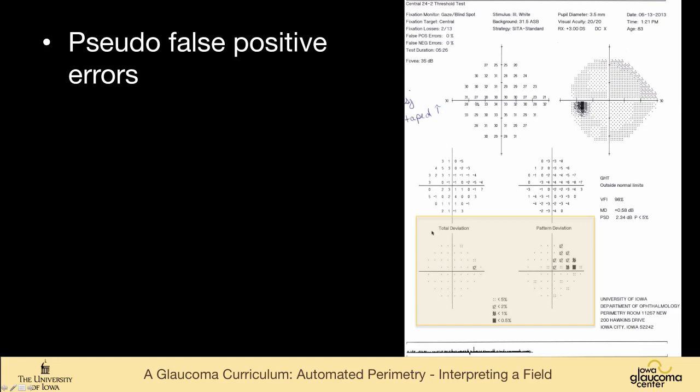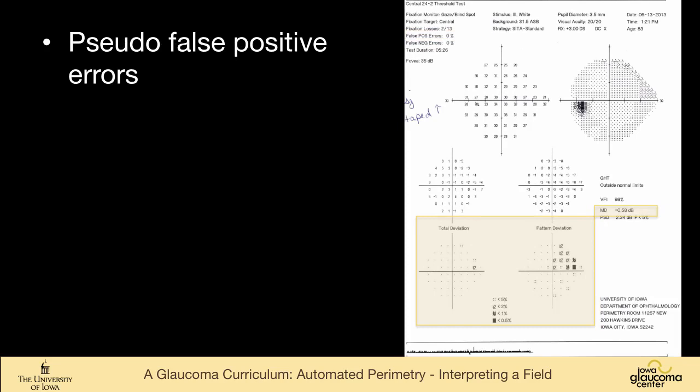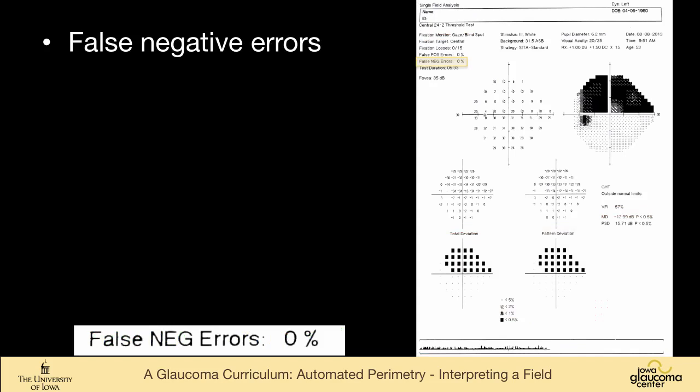And this is an example. There's zero false positives here. Total deviation, a little bit of abnormality, but nothing to write home about, and yet there's this arcuate defect here. Notice how this fits the nerve fiber layer pattern. If we go back to these other fields, not so much. They sort of fit with a random distribution. So this person has a high mean deviation despite having this defect in their superior field, no false positive responses. And obviously, like everything in medicine, you have to correlate it with everything else. So this person does have some thinning in the retinal nerve fiber layer, and this is a true visual field defect.